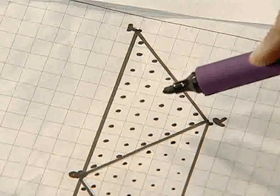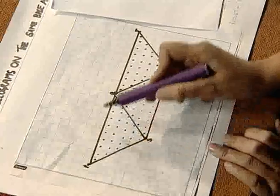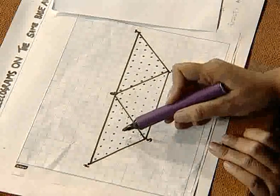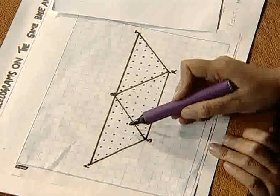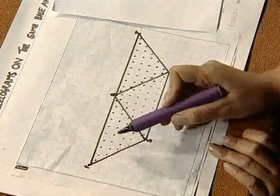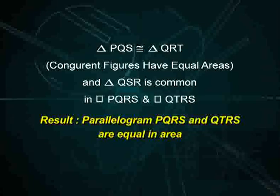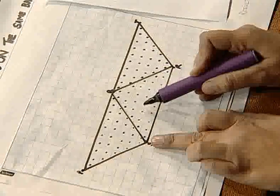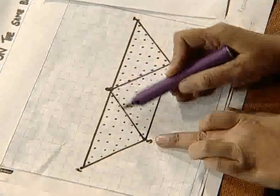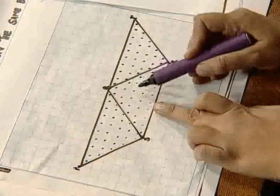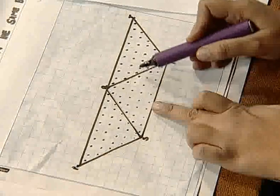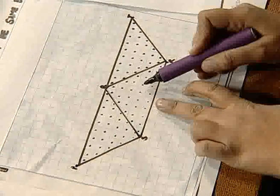So we observe that parallelogram PQRS has area 25 + 25 = 50 centimeter square, as it is made up of two triangles — triangle PQS and triangle QRS. Similarly, parallelogram QTRS has area 50 centimeter square, as it is made up of triangles QTR and QRS, each of area 25 centimeter square.